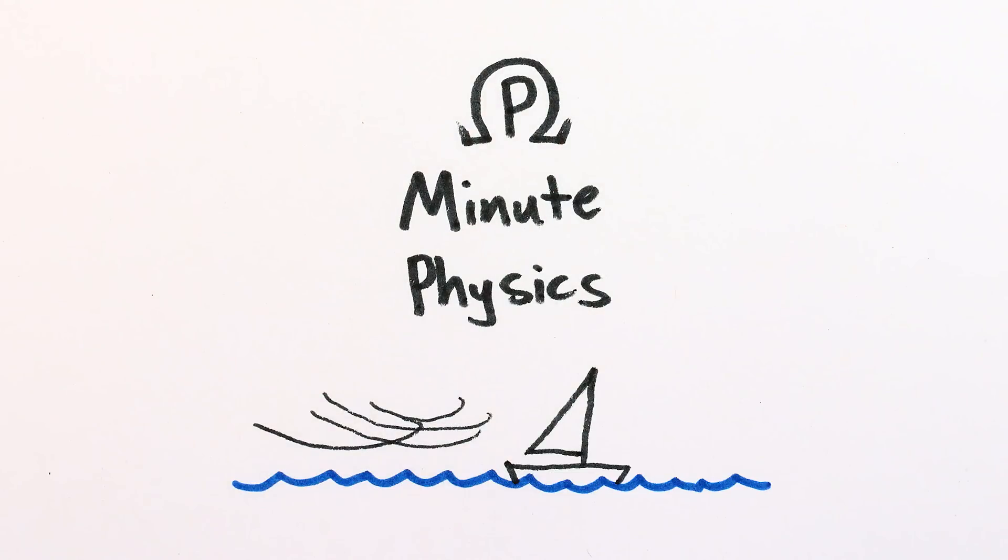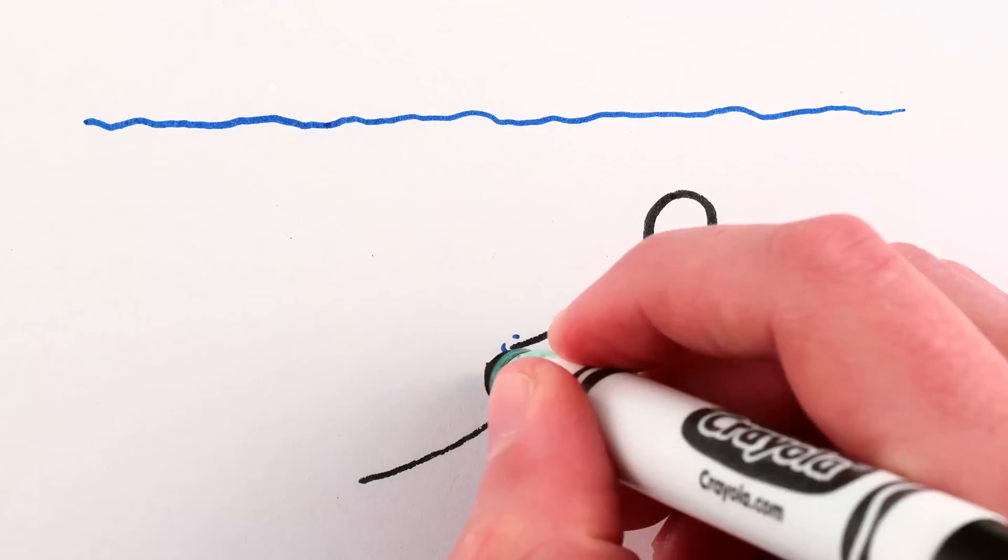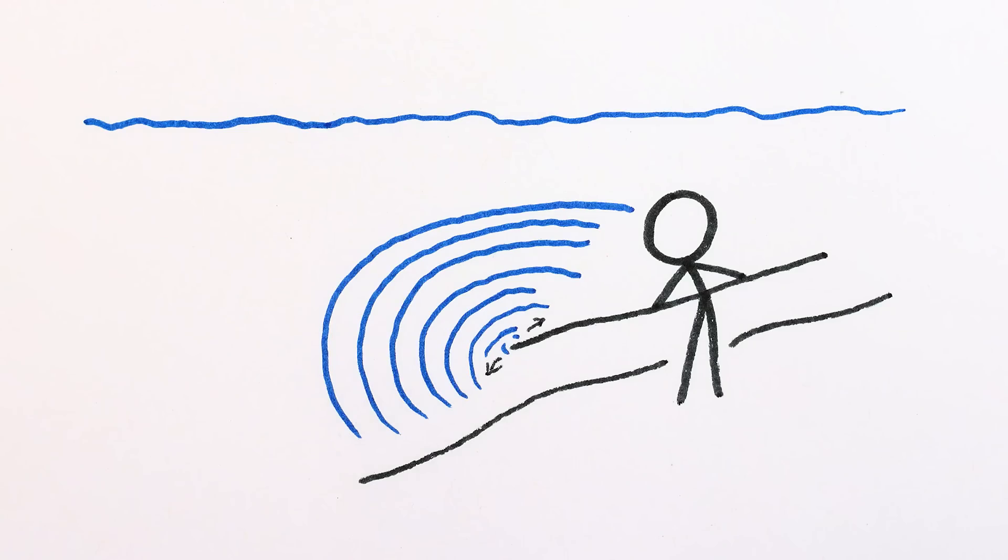When things move, they create waves. For example, if you shake a stick back and forth in water, you get water waves.